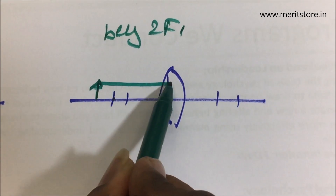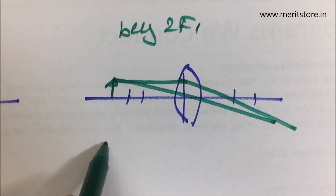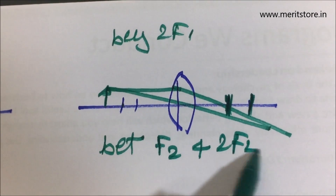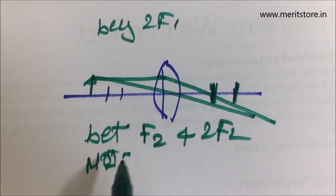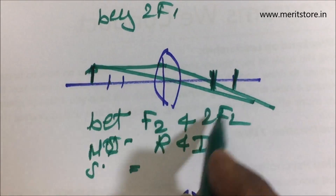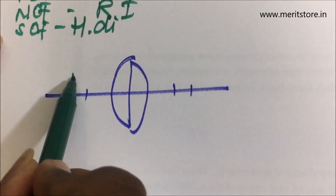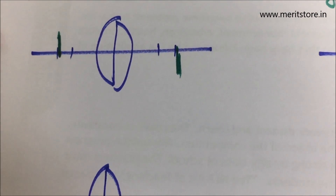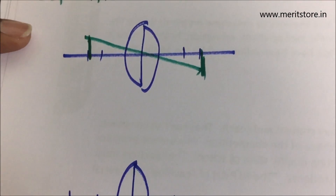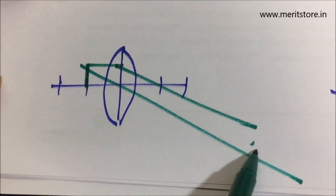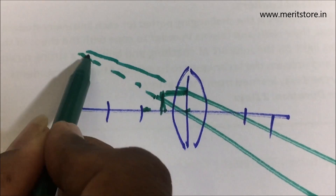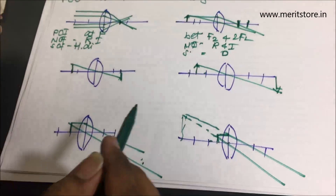Third: object at 2f — image at 2f, same size, real, inverted. Fourth: object between f and 2f — image beyond 2f, magnified, real, inverted. Fifth: object at f — image at infinity, highly magnified, real, inverted. Sixth: object between f and optical center — rays diverge, pulled back, virtual erect magnified image on the same side.